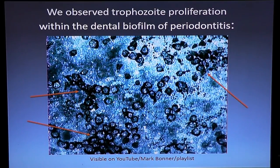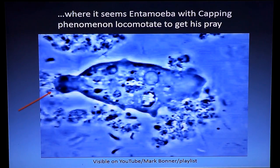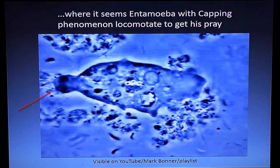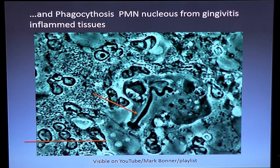What we can observe — at low power magnification — is the proliferation of all those amoeba. You can see maybe 60 amoeba present in one millimeter wide plaque biofilm from within the periodontitis sulcus. This is clearly easy to see for a young microscopist. When you look at it at 1000 magnification, you see the amoeba clearly moving within the biofilm, creating channels, and you see the capping phenomenon, which is known as pathogen activity. You can clearly see the nucleus again. This is all visible on our playlist on YouTube under Mark Bonner.